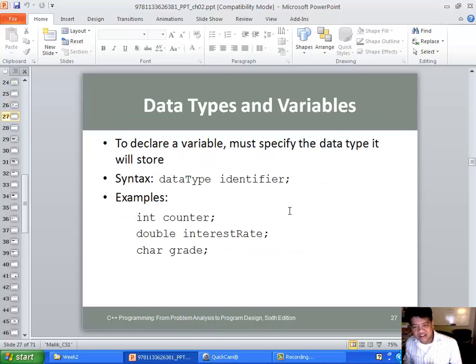To declare a variable, this is important how you write your code. You need to call it data type space the identifier. In this case, data type is an integer space identifier counter.